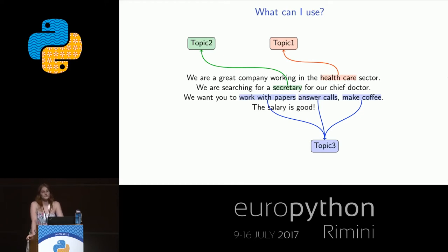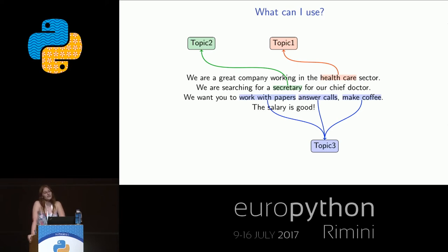My second thought was machine learning — it is kind of a hype now. I don't have labels; I don't want to label more than a thousand items I'd have to read through. So, unsupervised. I tried several models and ended up with LDA.